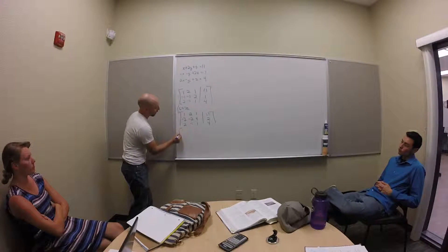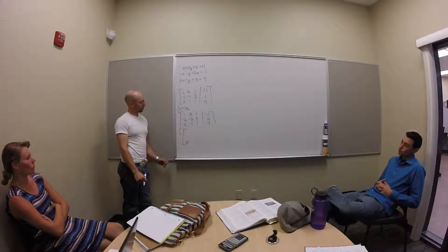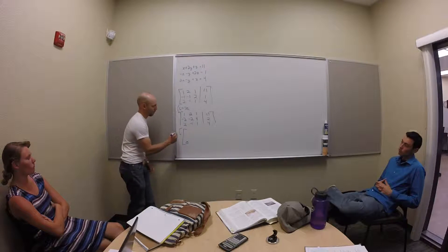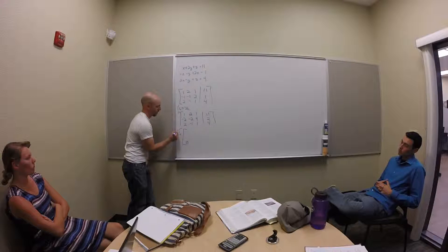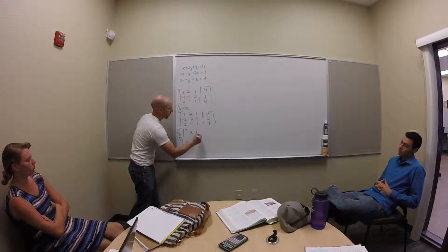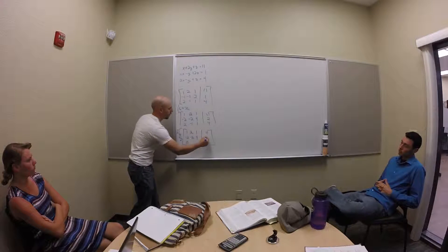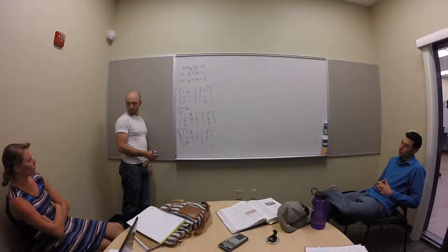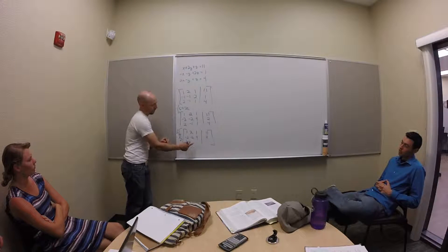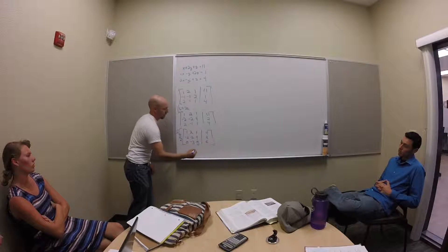Now I'm set up to get a zero down here. I'm going to take row 3 and turn it into row 2 plus row 3. So I leave my first row alone: 1, 2, 1, 11. I leave my second row alone: minus 2, minus 2, 4, 2. And then adding row 2 and row 3 together gives: zero, minus 3, five, and 6.